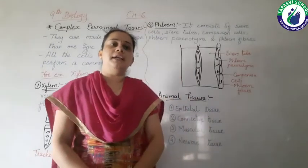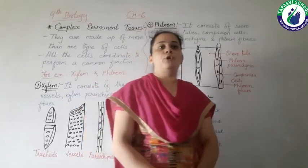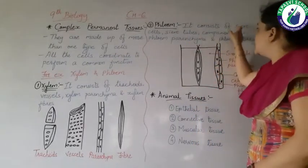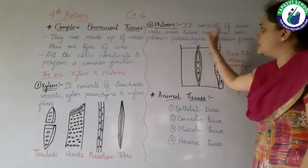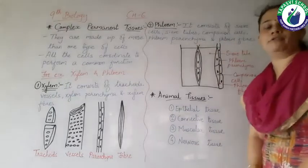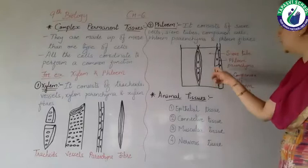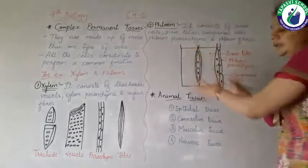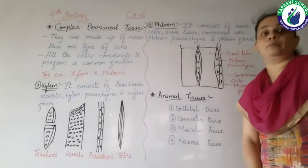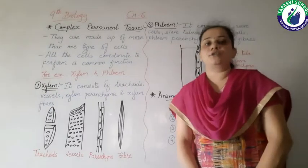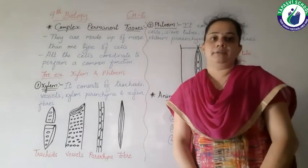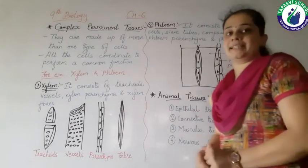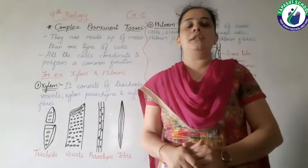Now let's move towards the next complex permanent tissue, that is phloem. Phloem consists mainly of five types of cells: sieve cells, sieve tubes, companion cells, phloem parenchyma and phloem fibers. As you can see in the figure, these cells all coordinate between each other and perform the common function of transporting food to the whole plant. The sieve tube is a tube-like structure which transports food to all parts of the plant.